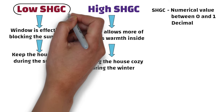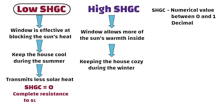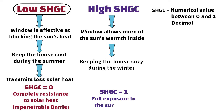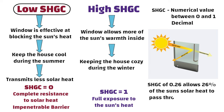A lower SHGC indicates that a window transmits less solar heat. A value of 0 indicates complete resistance to solar heat, acting like an impenetrable barrier, while a value of 1 indicates full exposure to the sun's heat. For example, a glass with an SHGC of 0.26 allows 26% of the sun's solar heat to pass through, meaning it blocks 74%.